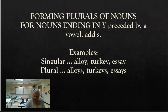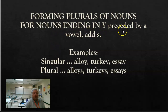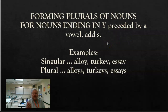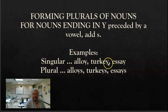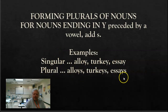Let's make sure we do it. For nouns ending in Y preceded by a vowel, add an S. In other words, it's a vowel and a Y, then add S. Singular: alloy, turkey, essay. You add an S: alloys, turkeys, essays.